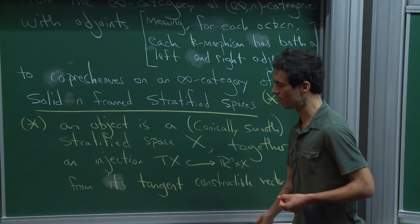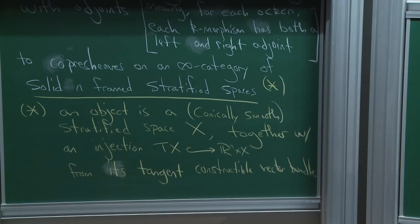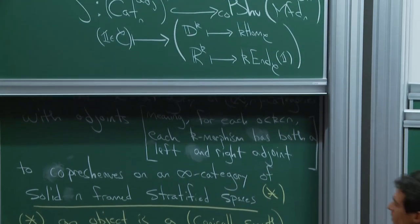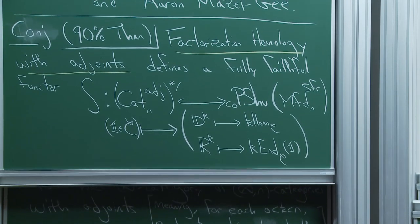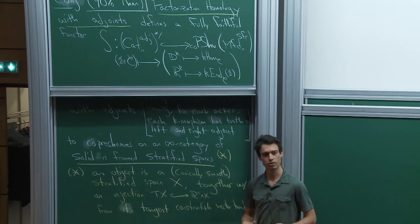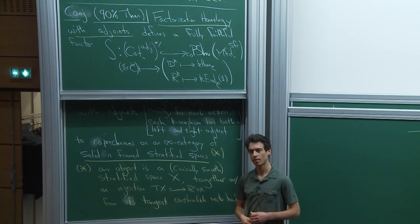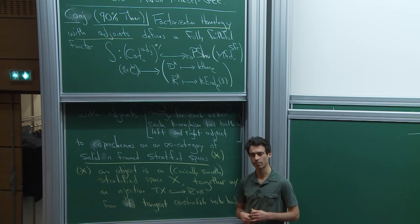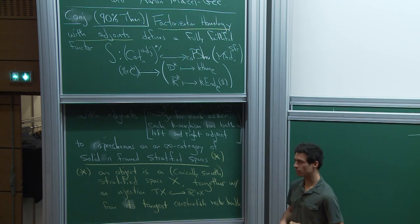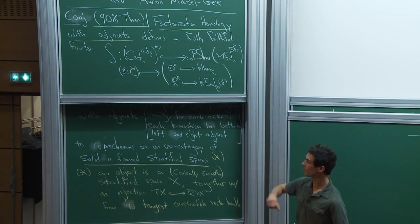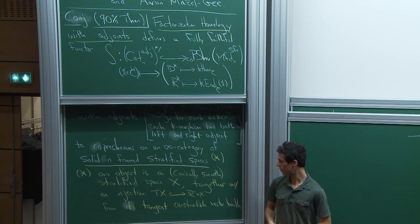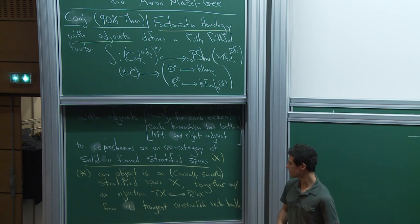An object in that MFD category is a stratified space—strictly speaking, what we call conically smooth. That's a type of regularity ensuring every stratum is a smooth manifold, and the links between strata have some regularity. Think of Whitney's stratified spaces. An object is also equipped with an injection of its tangent constructible bundle into the trivial rank-n bundle. An example is a smooth n-manifold with a parallelization, or a point equipped with the unique injection of its zero vector bundle.